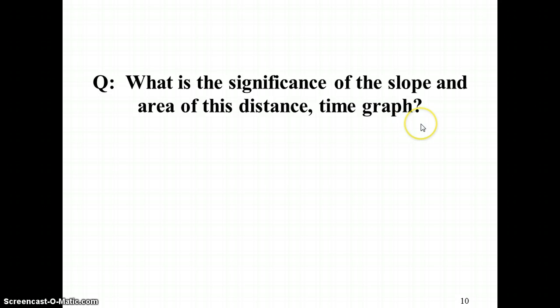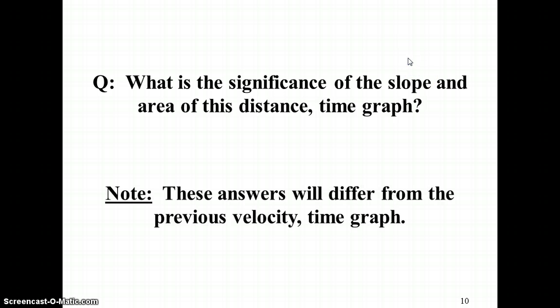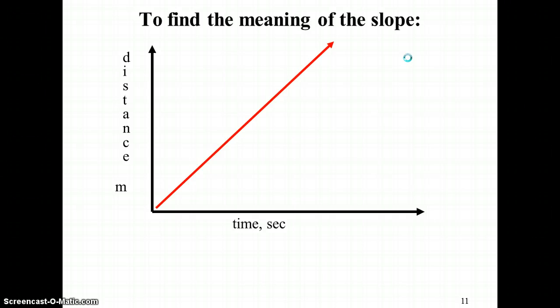In this case, if we looked at the area as well as the slope of this graph, we can try to figure out if we're getting anything useful from that. First off, if we look at the slope, here our rise over run is distance over time. So we wind up getting units of meters divided by seconds. So in this case, the slope of a distance time graph would actually give us the velocity or speed of the object.